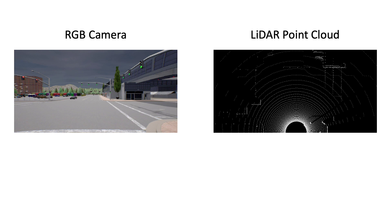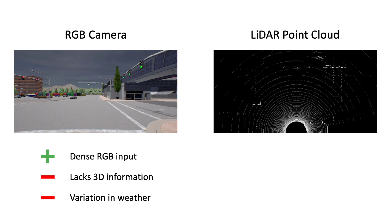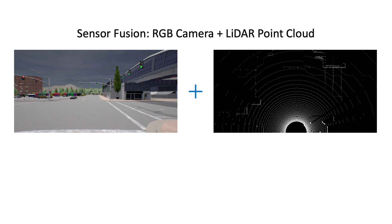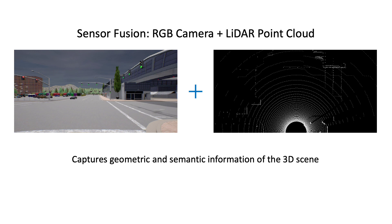The ego vehicle perceives the environment through different sensors, camera and LiDAR being the most popular ones. While a camera can provide dense perceptual information about the scene, it lacks reliable 3D information and is highly susceptible to variation in weather conditions. On the other hand, LiDAR consists of 3D information, but LiDAR measurements are typically very sparse and do not contain important information such as traffic light states. Hence, image-only and LiDAR-only methods are likely to fail in complex scenarios. This limitation can be mitigated by using fusion-based approaches, which helps to capture both the geometric and semantic information of the 3D scene.